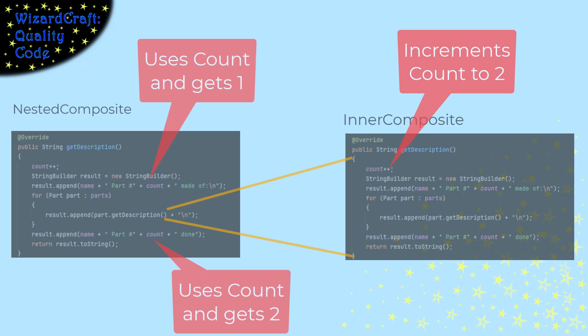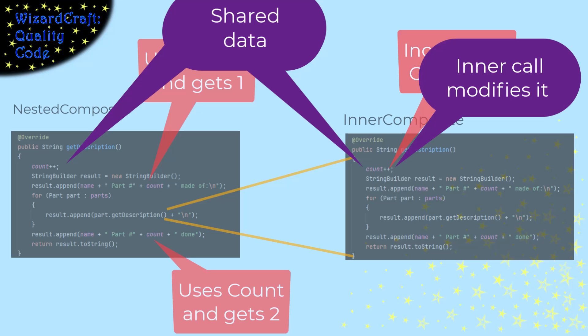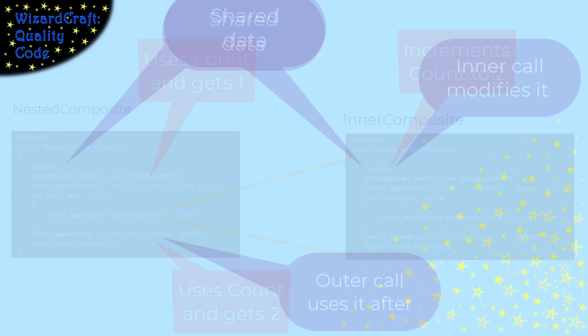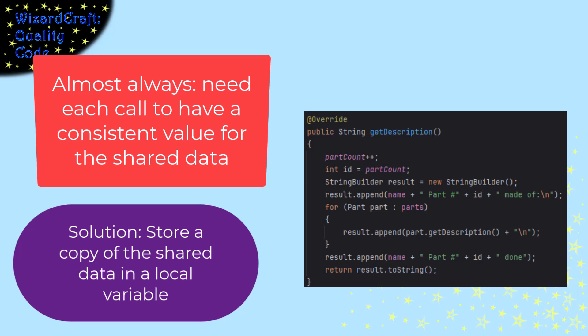So, for code to not be re-entrant, there has to be data that is shared between the two calls. The inner call has to modify that data, and the outer call has to use that data after the inner call completes. Now that we understand the conditions necessary for code to be not re-entrant, we can fix this code so that it is re-entrant. The trick to doing that, almost always, is to keep a copy of the shared data so that you are using a consistent version of it. In this case, let's save that count to a local variable named id and use that in our description.